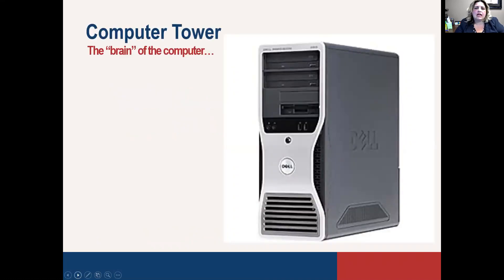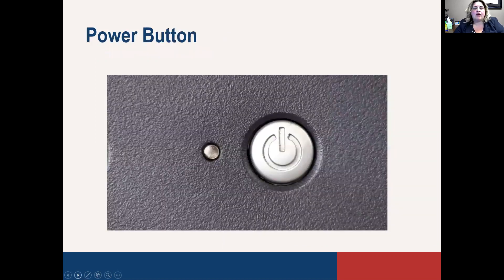The first thing is to understand the pieces of the computer, and the most important piece is the tower — the computer tower, also known as the brain of the computer. This is where the memory is at. It's what allows your computer to function, so without this your computer really wouldn't be a computer. We'll go over the tower and what you'll find on it so that you're familiar with it.